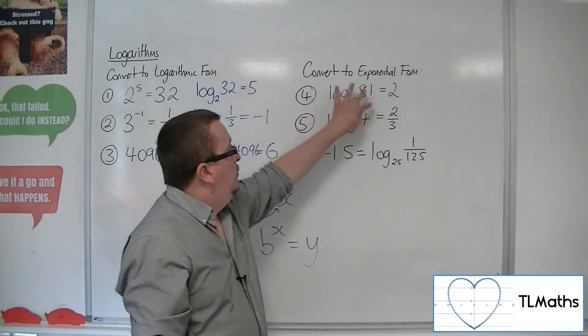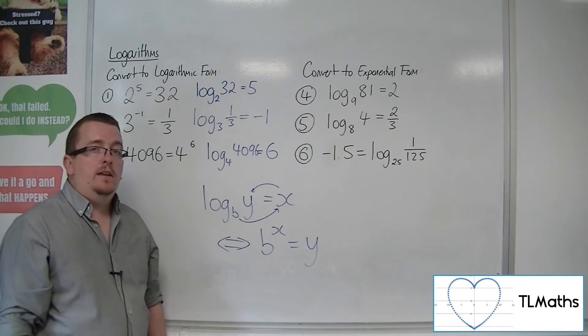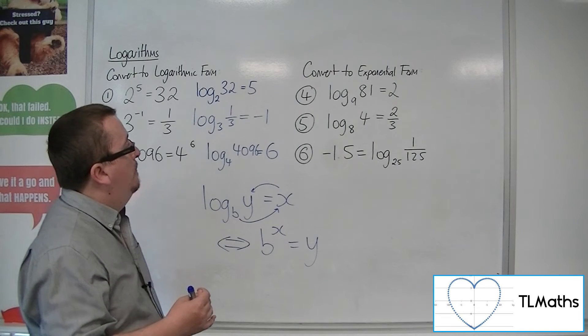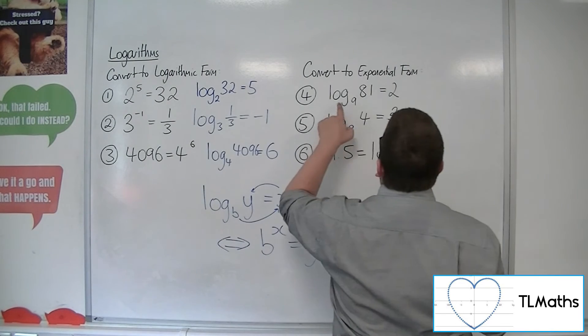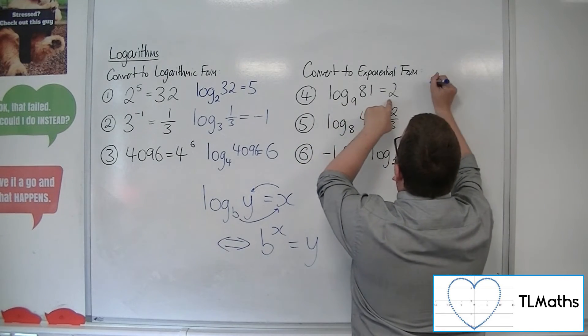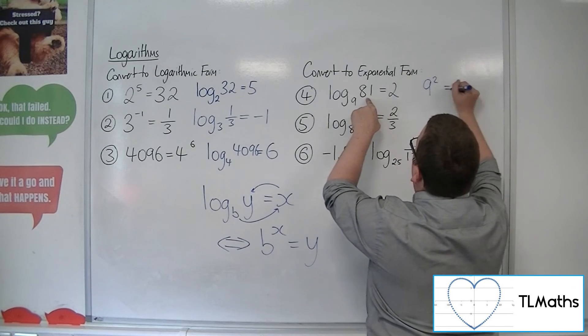Here we have three equations that are in logarithmic form. I want to convert them to exponential form. So log base 9 of 81 is equal to 2. So 9 to the 2 is equal to 81.